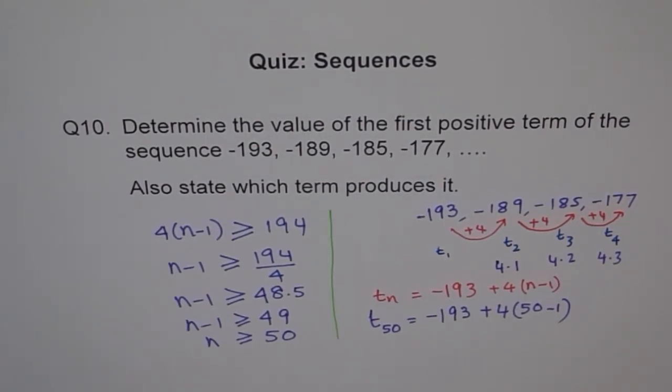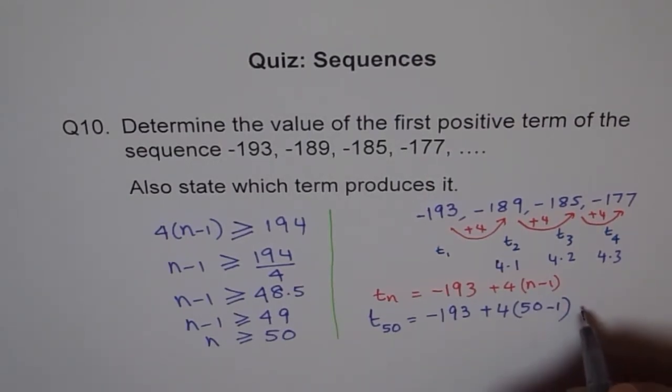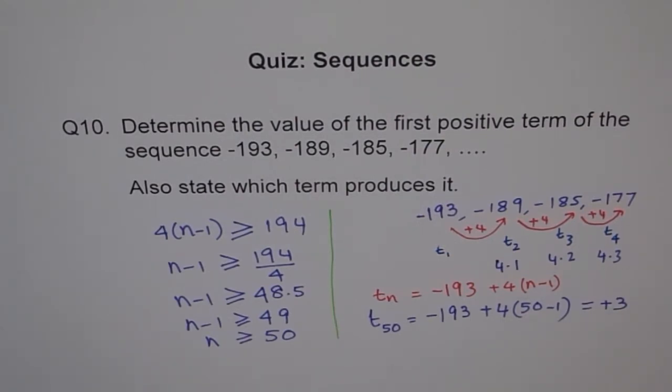So we say minus 193 plus 4 times 50 minus 1, which is 49 and which gives us plus 3. So this is equals to plus 3. So we do get a positive number and the positive number value is plus 3 and that is the 50th term.